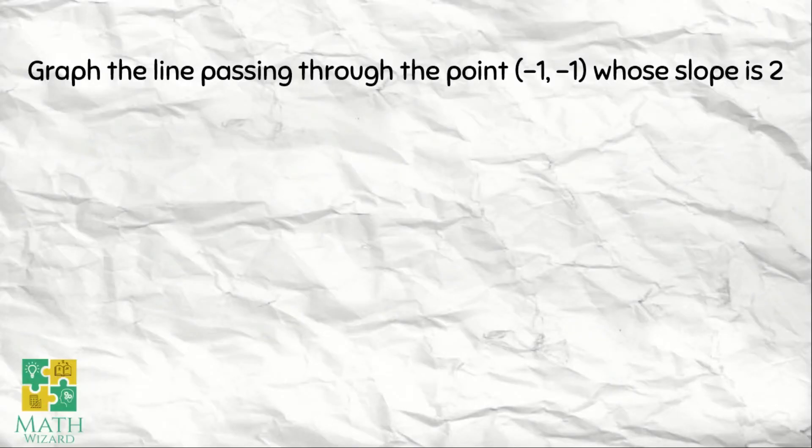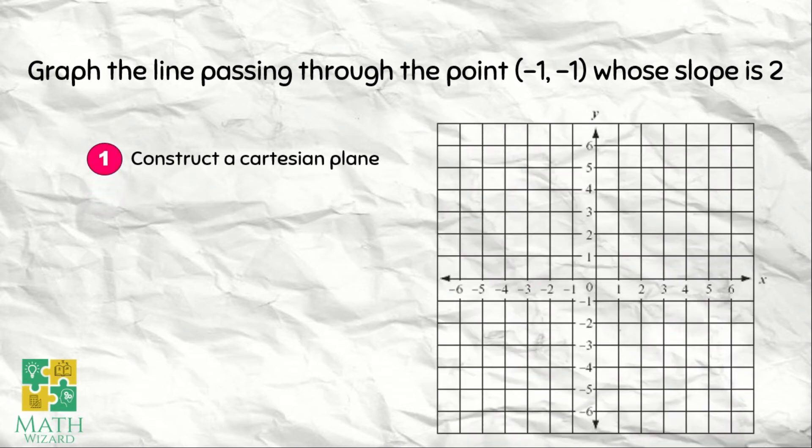Next example: graph the line passing through the point (-1, -1) with the slope of positive 2. Ano yung first step? We need to construct a Cartesian plane. So we have a Cartesian plane.